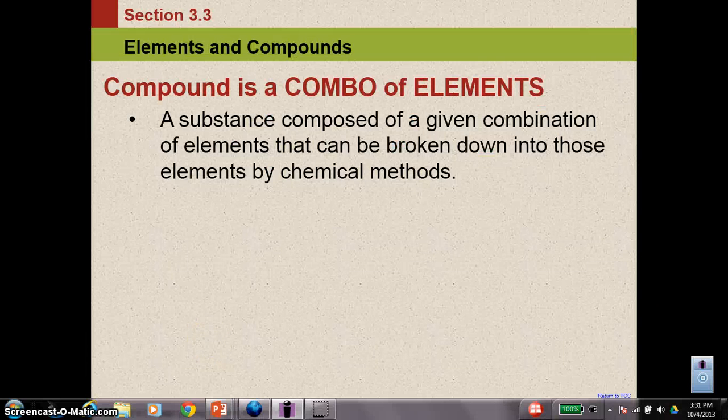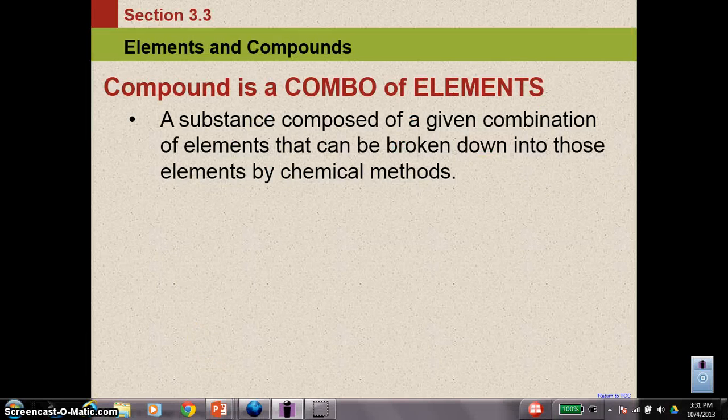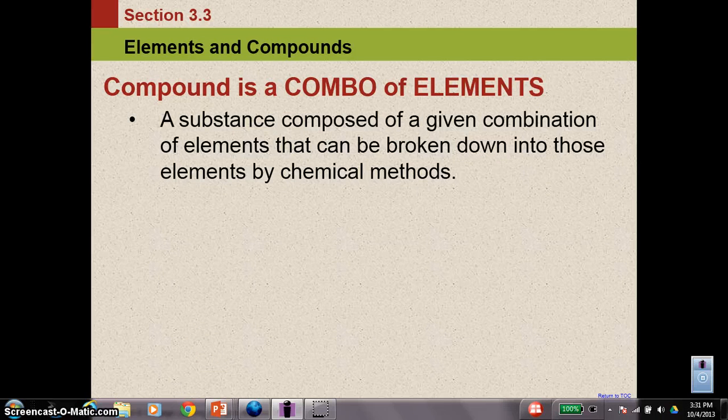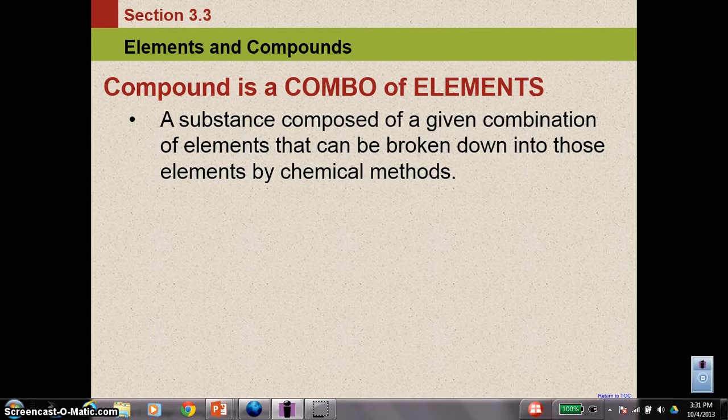If I put elements together in certain combinations, I come up with what is called a compound. A compound, by definition, is a substance composed of a given combination of elements that can be broken down into those elements by chemical methods only. So I can break a compound into its individual elements, but I can only do that through chemical means.